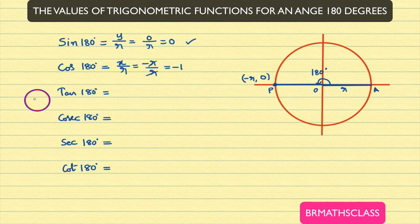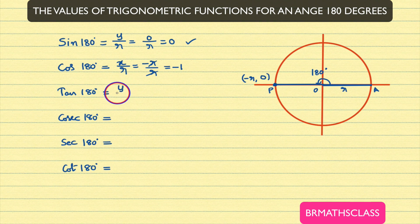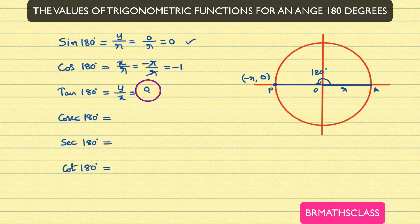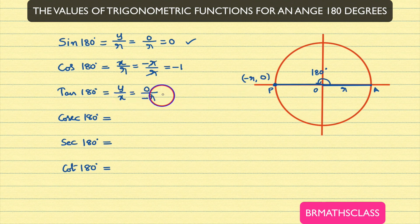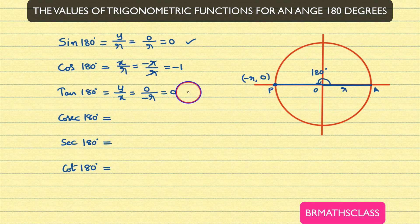Now, we will find the value of tan 180 degrees. From the definitions of trigonometric functions, tan theta is defined as y divided by x. Y means the y coordinate of this point, which is 0. X means the x coordinate of this point, which is minus r. So 0 divided by minus r is 0. Therefore, tan 180 degrees value is 0. From now onwards, we take this as a formula.